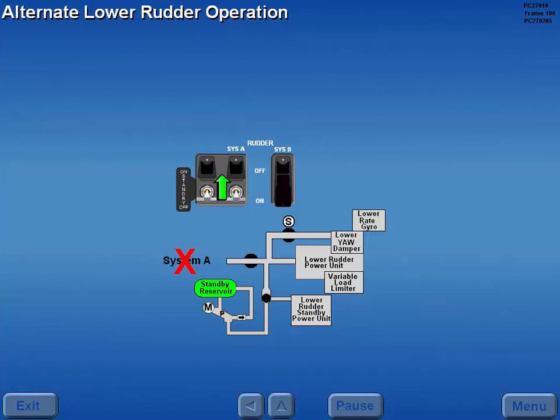Lifting and moving the connected rudder system A and rudder standby switch to the upper positions blocks system A pressure to the lower rudder system A power unit and starts the electric standby pump.